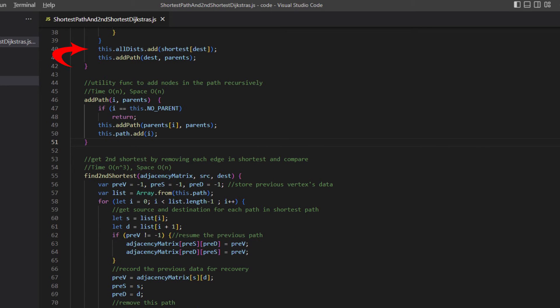At the end of the function, we add the shortest distance to the return set. We also call add path. Add path is a recursion function to add vertices in the shortest path by using the parents array. This path will be used for find second shortest distance.